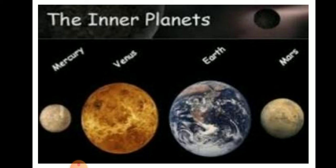Let us know some more interesting facts about inner planets. Mercury is the closest to the sun and is called the smallest planet in the solar system. It has very little air, is very hot during the day and very cold during the night. The period of revolution is 88 days, and there are no moons in Mercury.